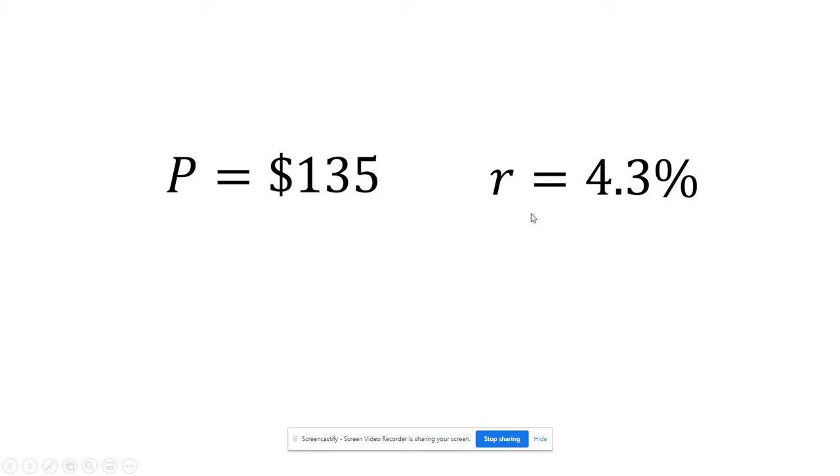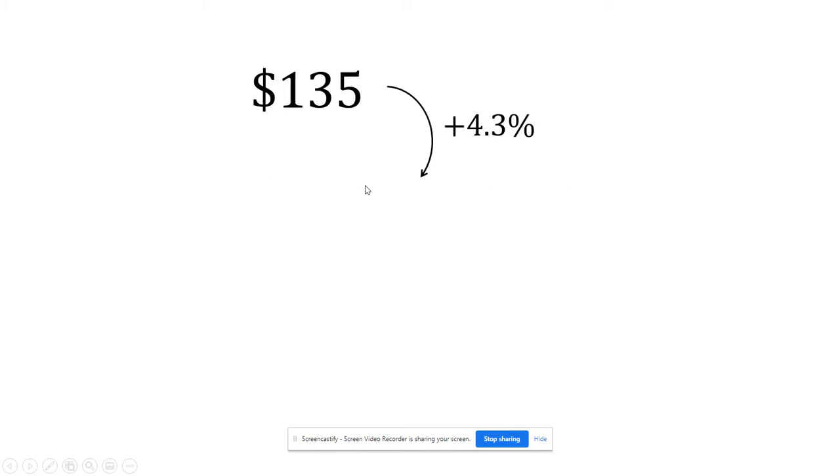Okay, now with simple interest, what we would do for the first year, we would take $135, and we'd figure out what 4.3% of that is, and we would add that on. So 4.3% of $135 is $5.805, and we got that by multiplying 135 by 0.043, basically doing P times R.